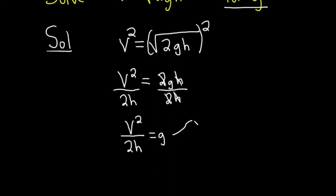If you like, you can write it the other way. It's really little g equals v squared over 2h. And that would be the final answer.